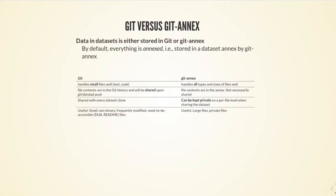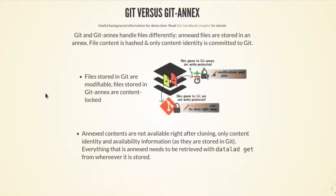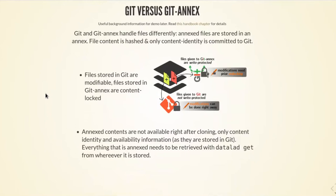If you have files with sensitive data — participant information, passwords in text files — you can give them to Git Annex. That ensures you can keep those files private on a per-file level, not exposing their contents to the revision history, which can be very useful depending on your field of study.